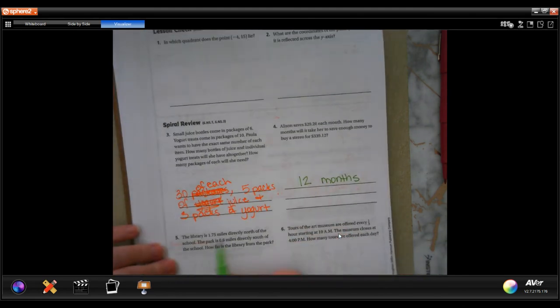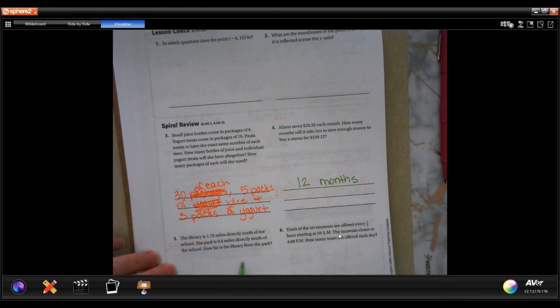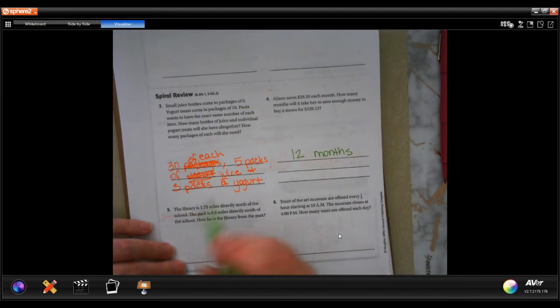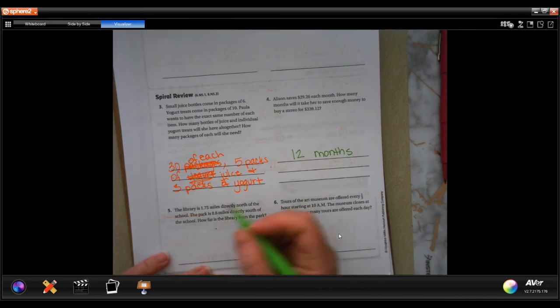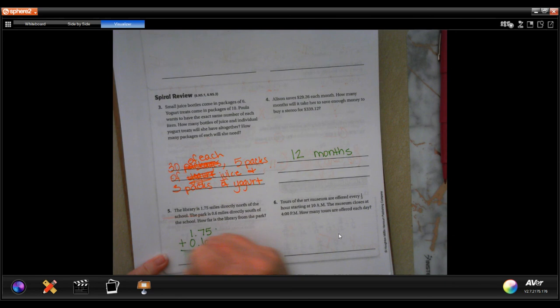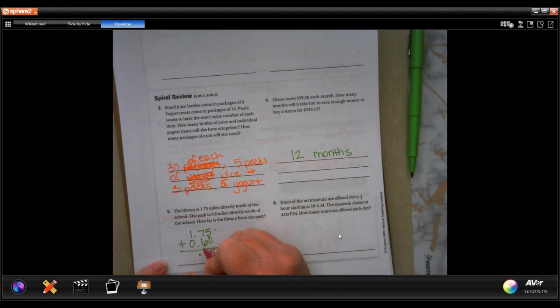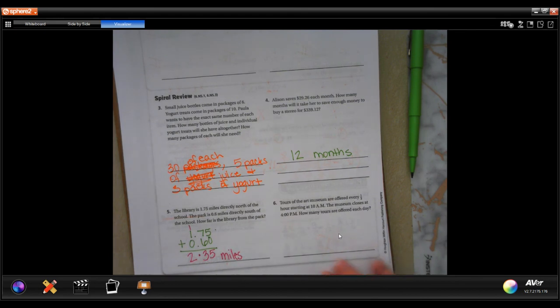The library is 1.7 miles directly north of the school. The park is 0.6 miles directly south of the school. How far is the library from the park? So here's another one where if we both start at zero, one walks that way and one walks that way, that means we have to add those, not subtract them. We're not trying to find the difference, we're trying to find out the total distance. So 1.75 plus 0.6. I'm going to go ahead and put a zero there so I know that my columns are lined up. I'm going to drop my decimal. Five plus zero is five, seven plus six is 13, carry that one, and one plus one is two. And that is my answer.